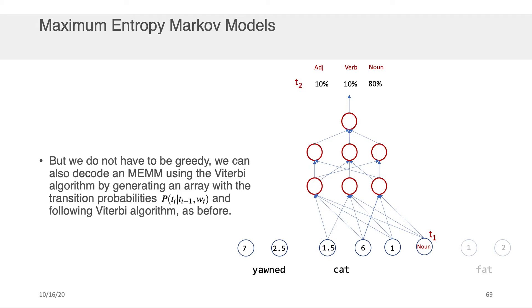But we don't have to make a greedy decision with a maximum entropy Markov model. We can also decode an MEMM using the Viterbi algorithm by simply generating an array with the transition probabilities or the probability of T given the previous T and the word that's the input. And then we can just follow the Viterbi algorithm as before.